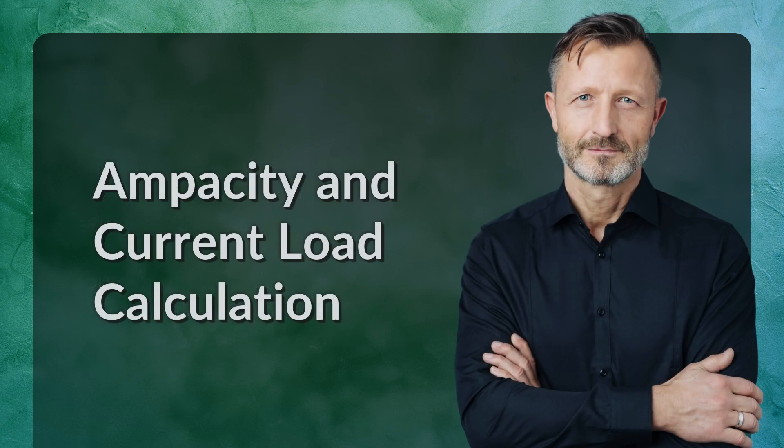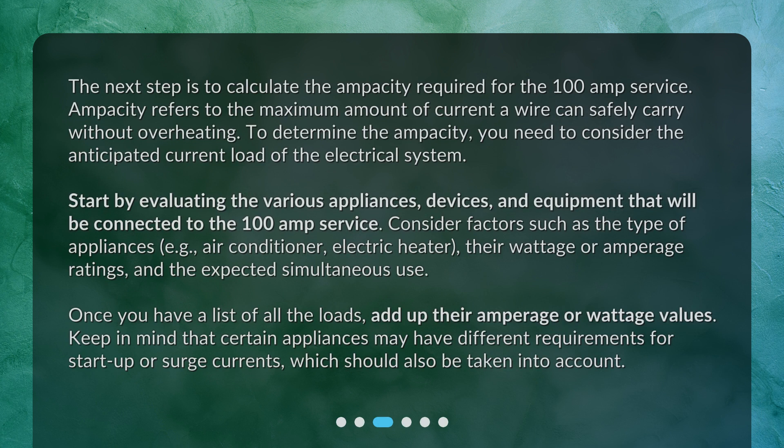Ampacity and Current Load Calculation. The next step is to calculate the ampacity required for the 100 amp service. Ampacity refers to the maximum amount of current a wire can safely carry without overheating. To determine the ampacity, you need to consider the anticipated current load of the electrical system. Start by evaluating the various appliances, devices, and equipment that will be connected to the 100 amp service. Consider factors such as the type of appliances — e.g., air conditioner, electric heater — their wattage or amperage ratings, and the expected simultaneous use. Once you have a list of all the loads, add up their amperage or wattage values. Keep in mind that certain appliances may have different requirements for startup or surge currents, which should also be taken into account.